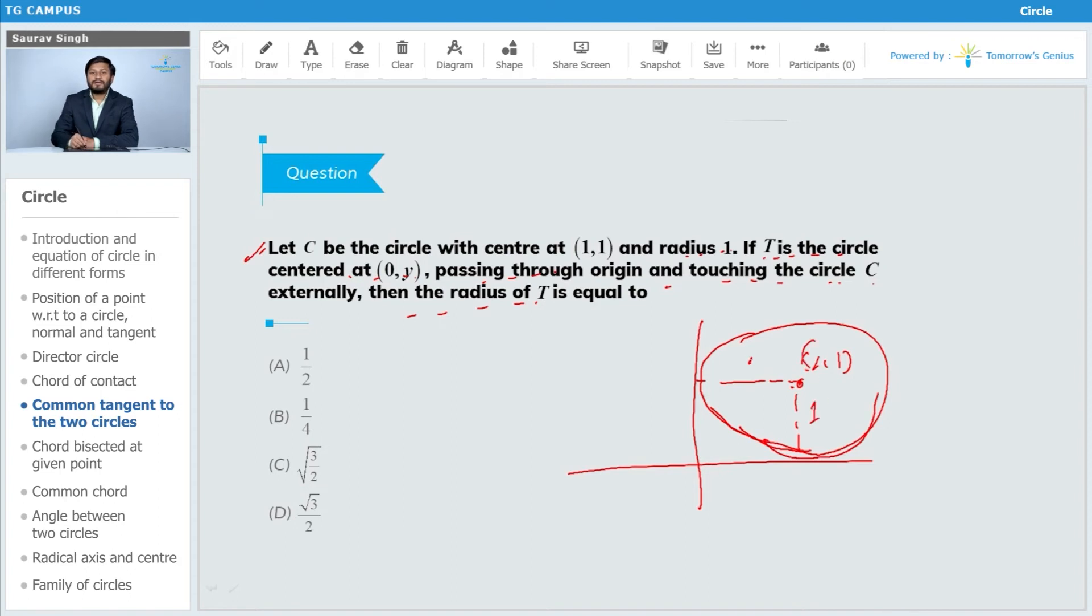Now we have another circle whose center is at 0 comma y and passing through origin. So 0 comma y is its center. Suppose this is 0 comma y and it is passing through the origin.